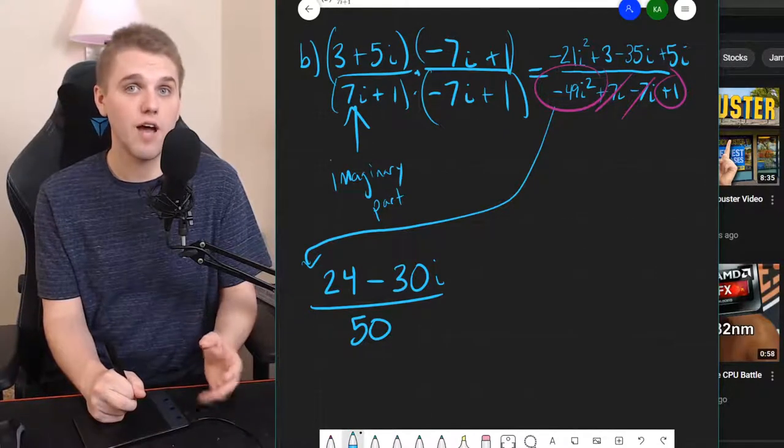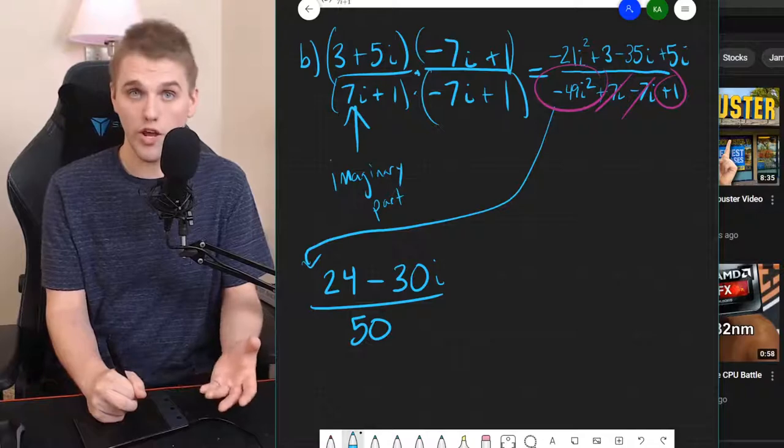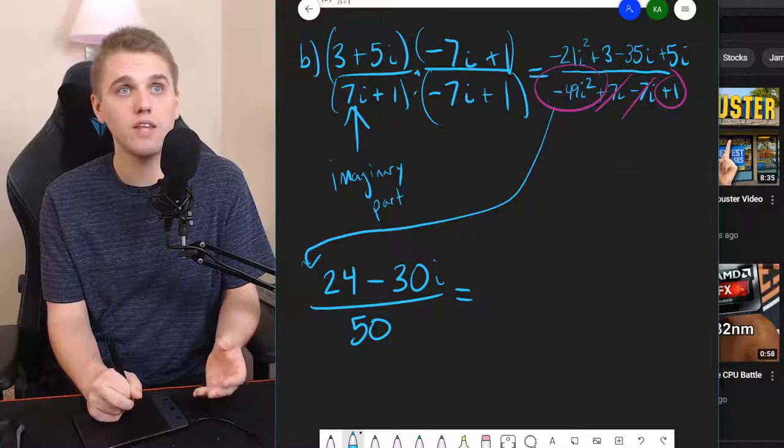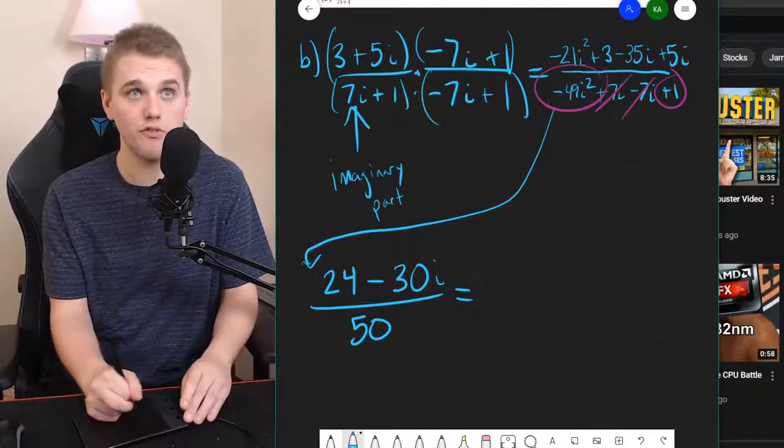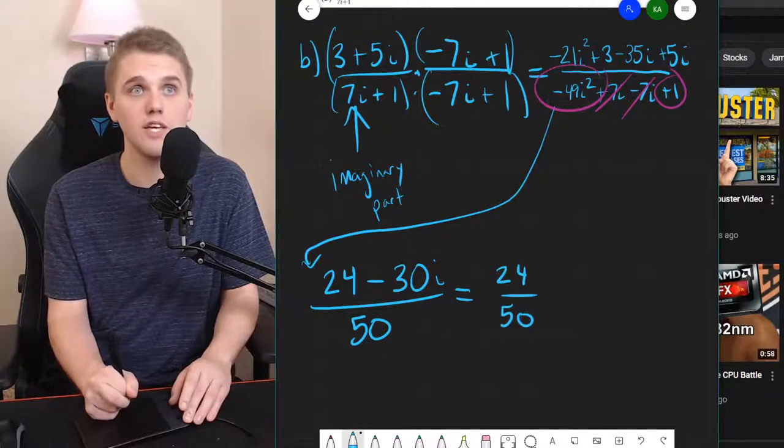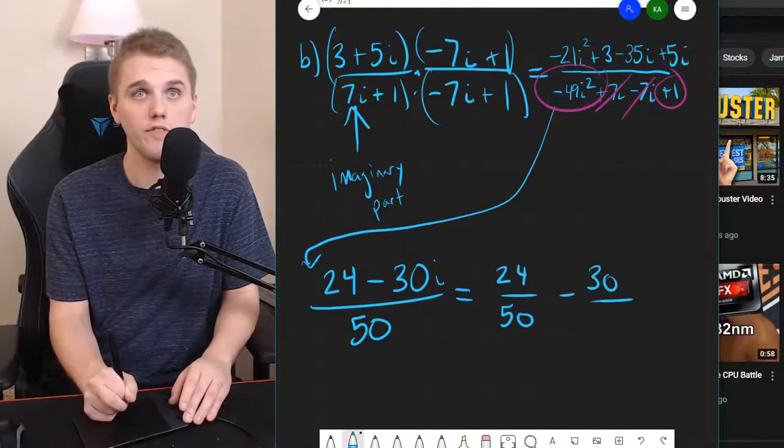So as I said earlier, imaginary parts in numerators are a lot easier to work with mathematically. And you might notice that we can separate this fraction into two fractions: 24 over 50 minus 30 over 50i.